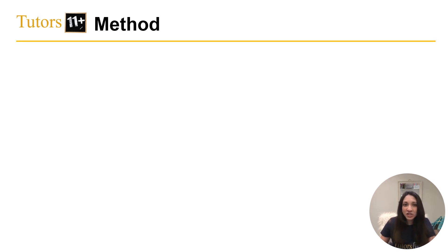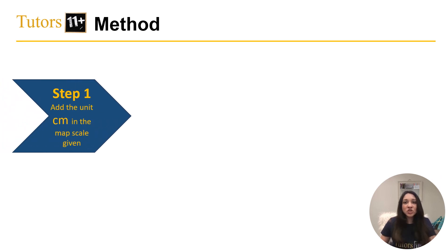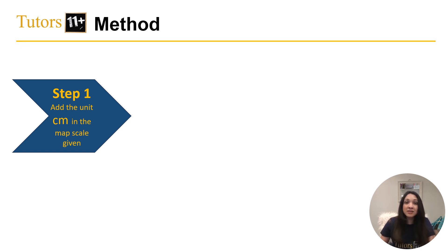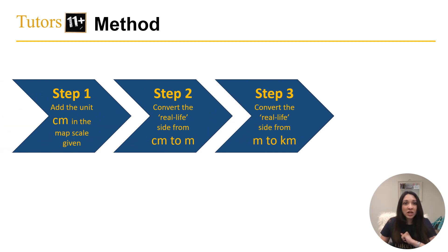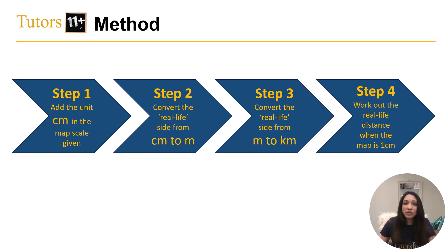Let's get into it. You can break these questions down into 4 easy steps. The first step is to add the unit centimeters in the map scale given. Step 2, convert the real life side then from centimeters to meters. And then step 3, convert the real life side from meters to kilometers. Your last step then is simply to work out the real life distance when the map is 1cm. This will allow you to answer any question that you're given using the map scale.